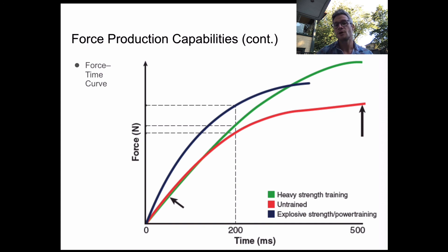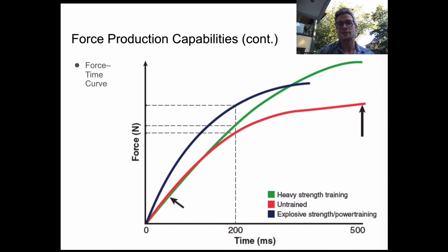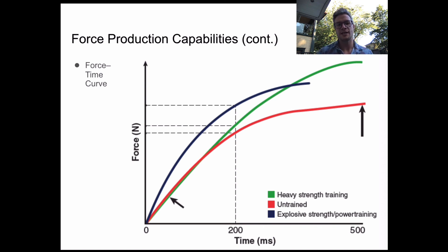Ultimately, heavy strength trained individuals will be able to produce a little bit more force but at a much slower rate. When we're talking about high performance sports or even activities of daily living — such as catching ourselves if we're going to fall, or any quick movements where we need a lot of force — including some sort of explosive strength training into exercise programming is ideal. That's a look at how we speak to different force production, velocity, time, and strength, and how that looks when we're starting to think about training programs.